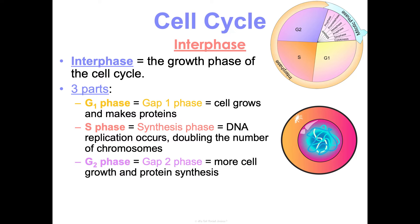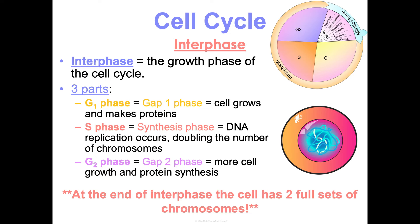Next is G2, which is gap two phase. More cell growth is happening here and more proteins are being synthesized to help with the process. At the end of interphase, before we go into mitosis, you should have two entire full sets of chromosomes — double the amount of DNA that you normally have in your cell.